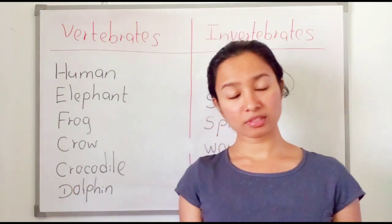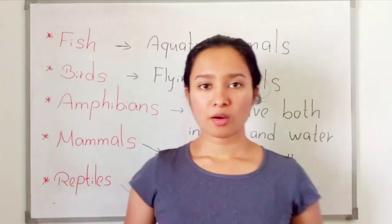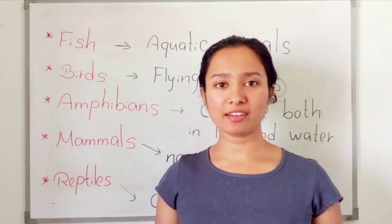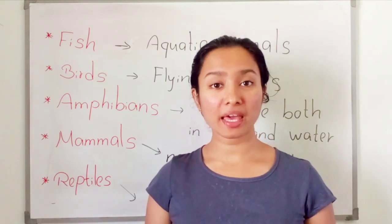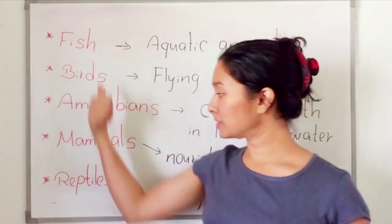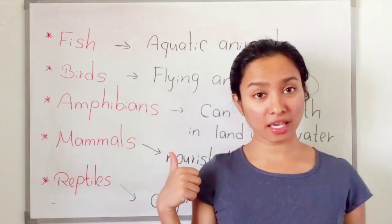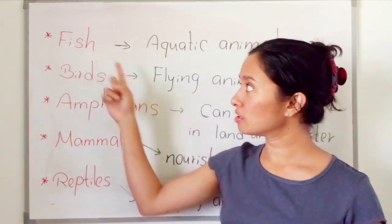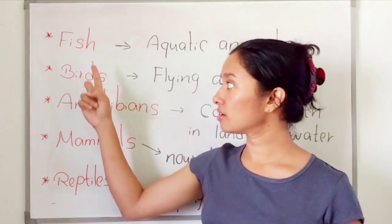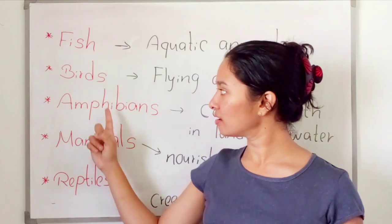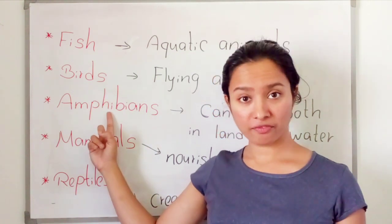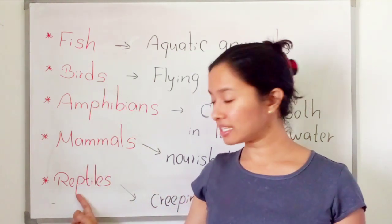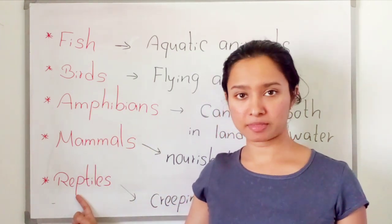Vertebrates can be further divided into five main groups. These are the five main groups: fish, birds, amphibians, mammals, and reptiles.